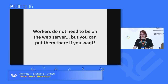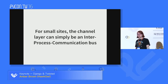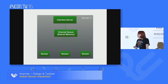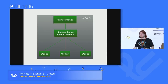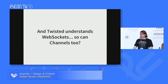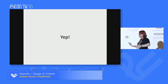Workers don't actually need to be on the web server, but you can put them there. For small sites like a blog, the channel layer only needs to be an inter-process communication bus — for example, shared memory — so it doesn't go over the network at all. That doesn't change much if you're just using the regular run server. And because Twisted understands WebSockets, so does Channels — Django natively supports WebSockets.